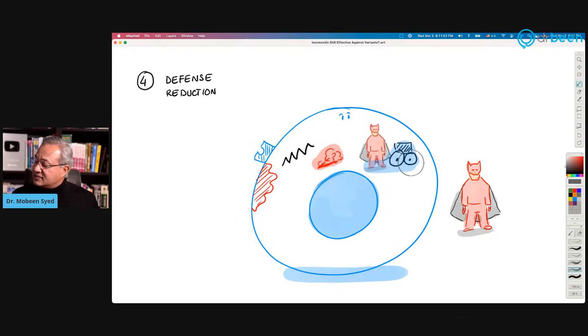Again, ivermectin is present in this area. What it does is it binds with importin alpha and beta, and that disrupts the viral cargo from going through the nucleus. This function for one variant or the original or all variants is the same, and so ivermectin would continue to disrupt them. Will ivermectin help here? Yes. Will it continue to help against all variants? Yes. Any issues with ivermectin here? No.